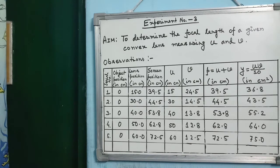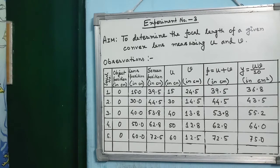u is lens position minus object position, giving 15, 30, 40, 50, 60. v is screen position minus lens position. p is equal to u plus v, which equals the screen position, so just note down the screen position in the p column. Then y is equal to uv divided by 10.